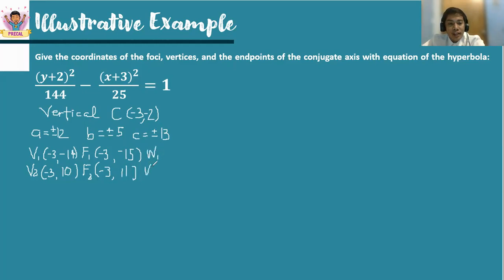Lastly, let us determine the endpoints of the conjugate axis, w sub 1 and w sub 2. We use the formula h plus or minus b, k. The k value will retain, which is negative 2. To find the abscissa, we refer to the b distance: negative 3 minus 5 and negative 3 plus 5. So the first coordinate is (negative 8, negative 2), then negative 3 plus 5 gives (2, negative 2).